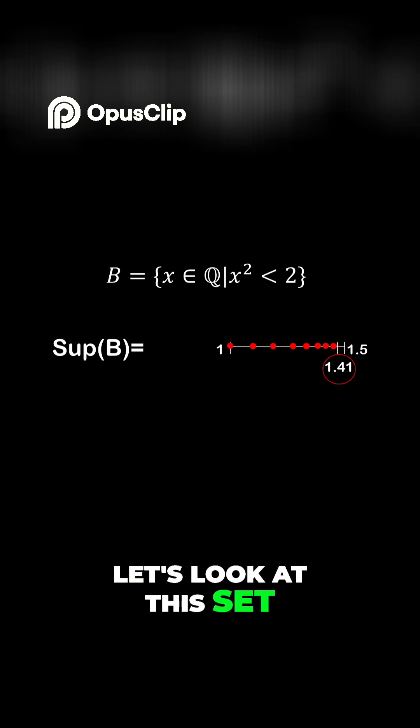Let's look at this set. So, this set is for X in the set of rational numbers, such that X squared is less than 2.